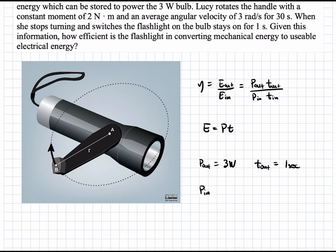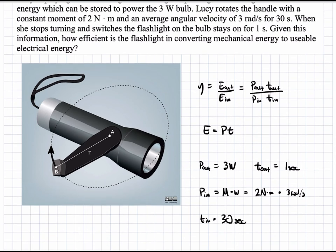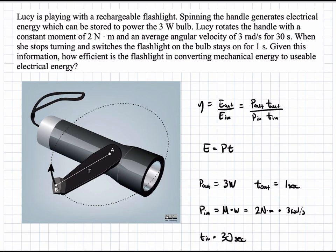And that is done by simply multiplying the moment and the angular velocity. So, this is going to be equal to M times omega. And this is going to be equal to 2 newton meter times 3 radians per second. And T-in is equal to 30 seconds, because, again, this is given in the question over here.